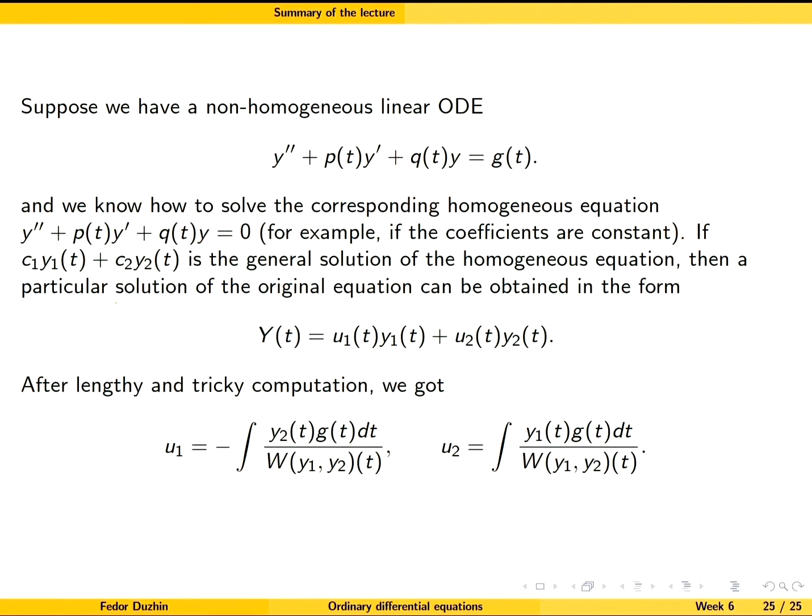If we know the general solution of the corresponding homogeneous equation, then the method of variation of parameters tells us how to find a particular solution of the non-homogeneous equation. You write it as a combination of solutions of the homogeneous equation with coefficients that are functions of t, and they can be found using this method.